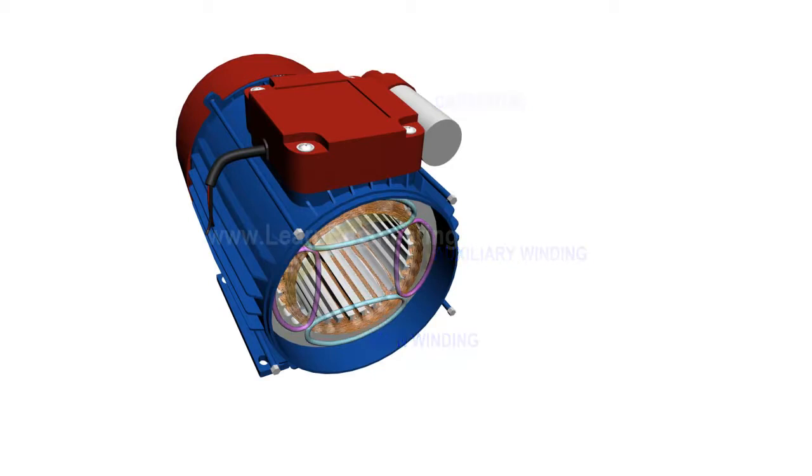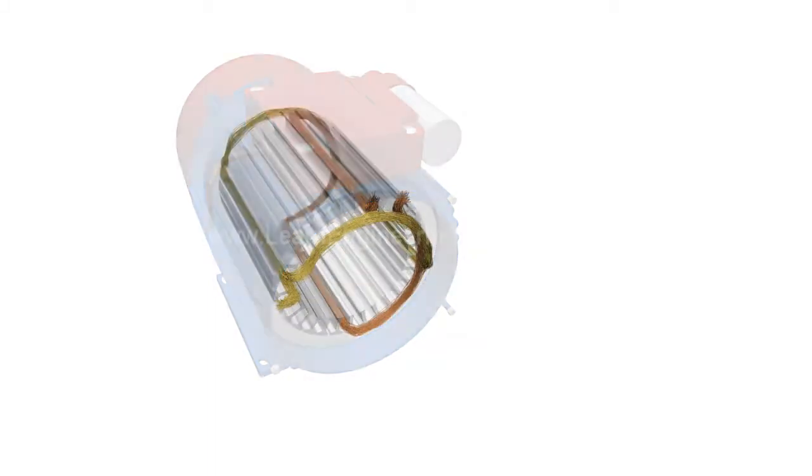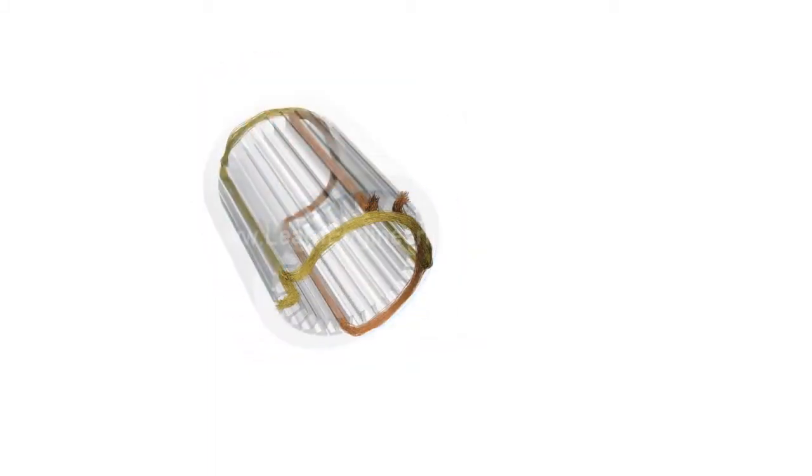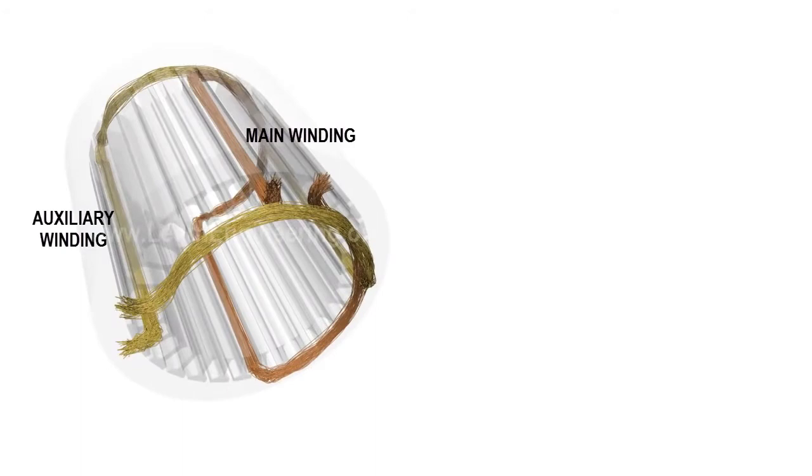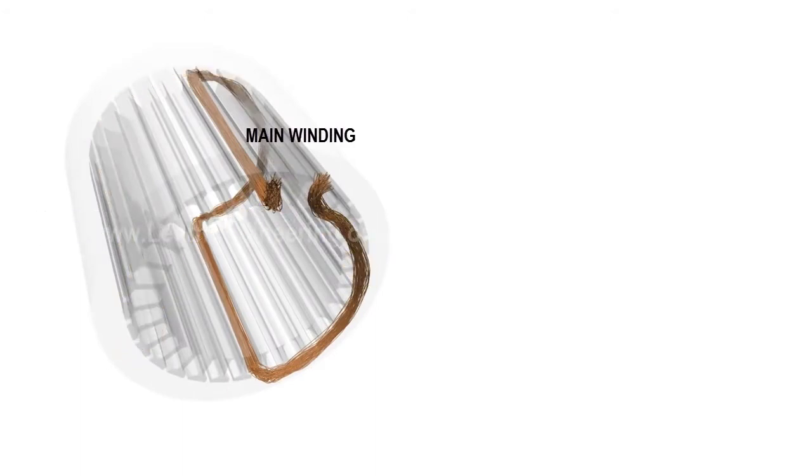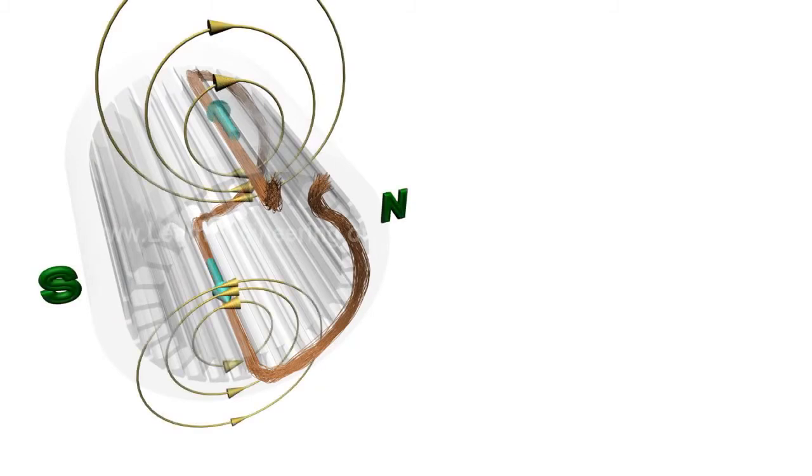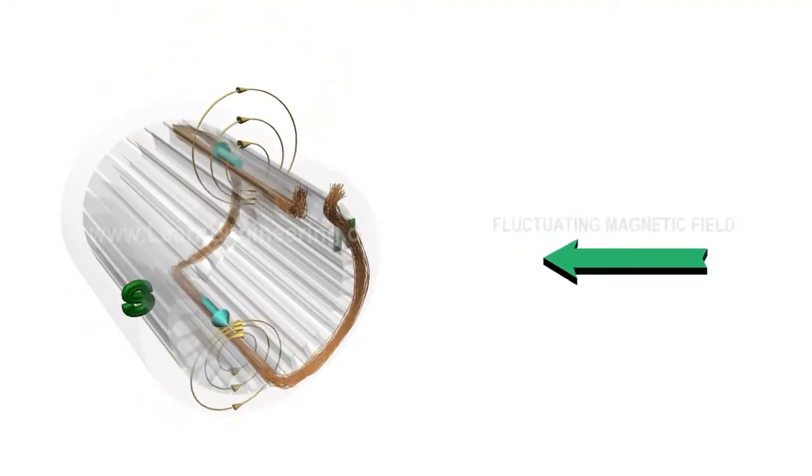Let's assume there is only one coil in main and auxiliary winding. To understand its working better, assume no current is flowing through auxiliary winding. AC current passing through main winding will produce a fluctuating magnetic field.